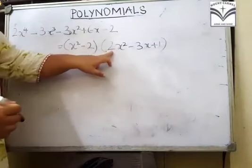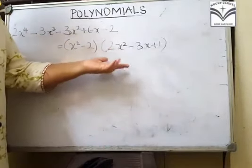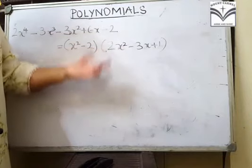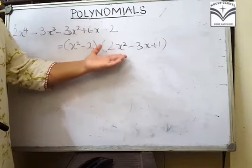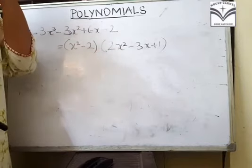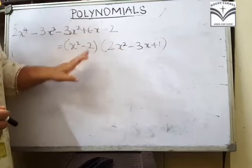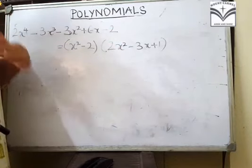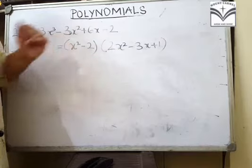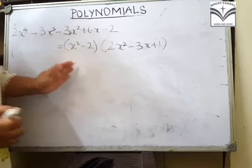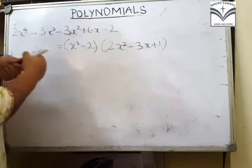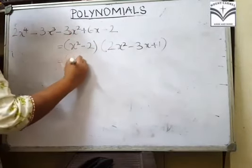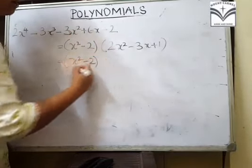Ab hum kya karenge — isko aise nahi chhod sakte, kyunki aapko kya bola gaya hai, iske 0s find karne hain. 0s find karne ke liye factors karna hai. Factorization mein hum yahan splitting of the middle term karenge. Iske already pata hai root 2 and minus root 2 — vo humne pehle kar diya tha. Ab isko splitting of the middle term se karenge, so yeh ho gaya x² - 2.